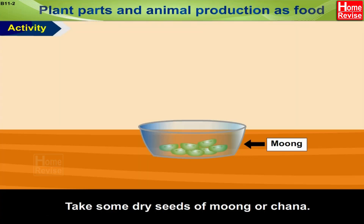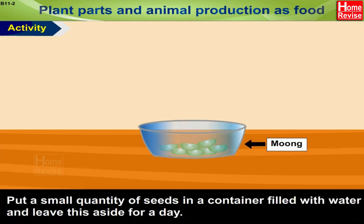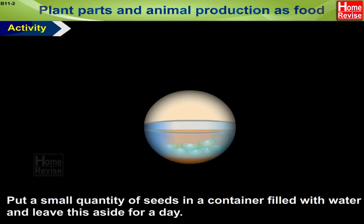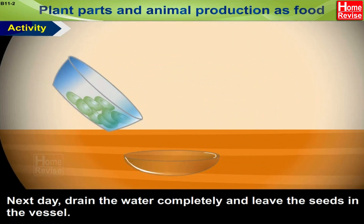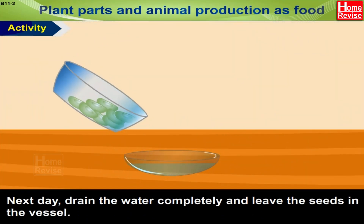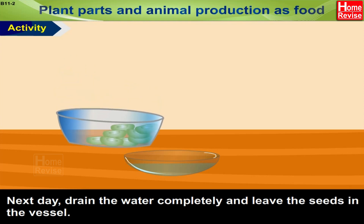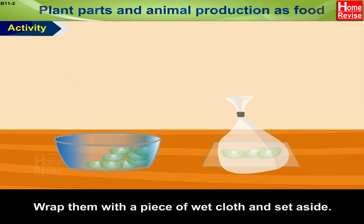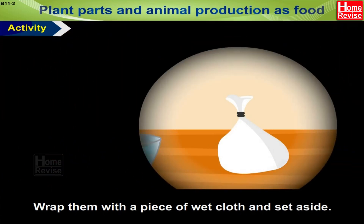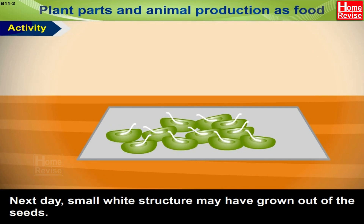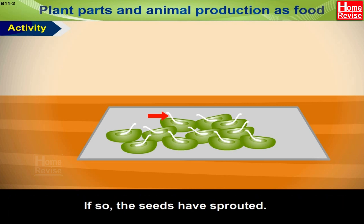Let us do an activity. Take some dry seeds of moong or chana. Put a small quantity of seeds in a container filled with water and leave this aside for a day. Next day, drain the water completely and leave the seeds in the vessel. Wrap them in a piece of wet cloth and set aside. The next day, small white structures may have grown out of the seeds — this means that the seeds have sprouted!